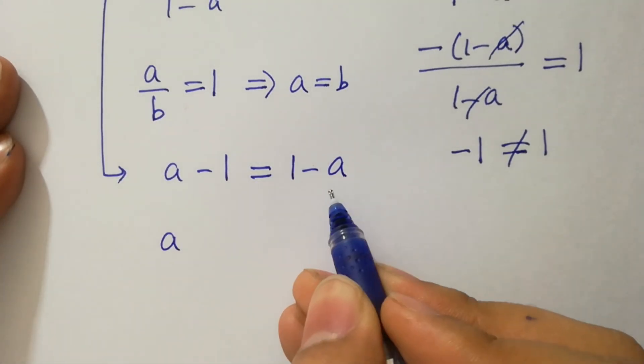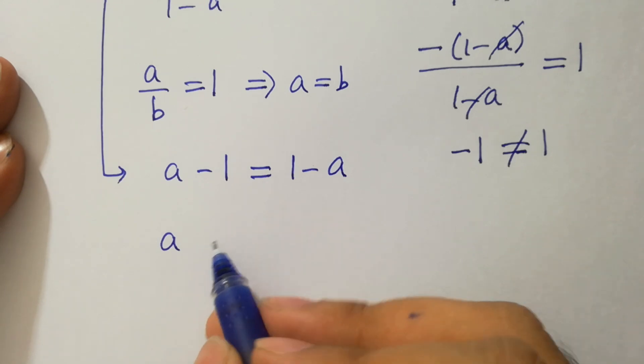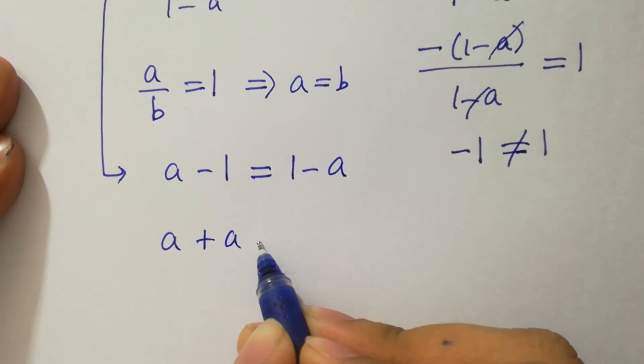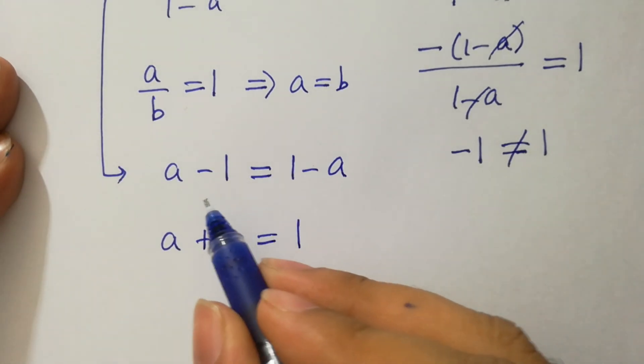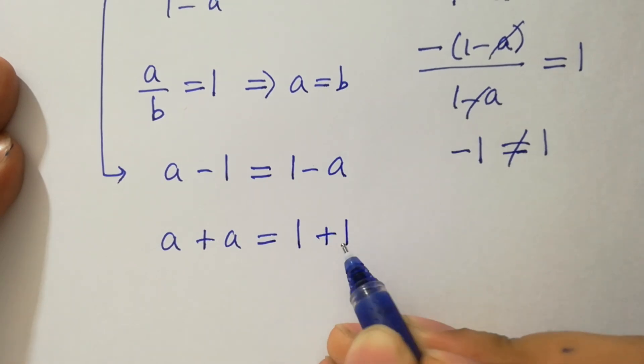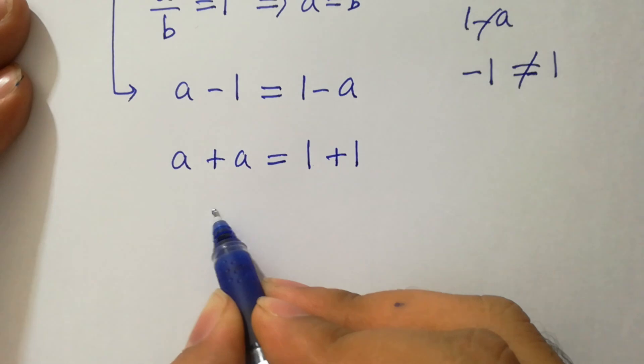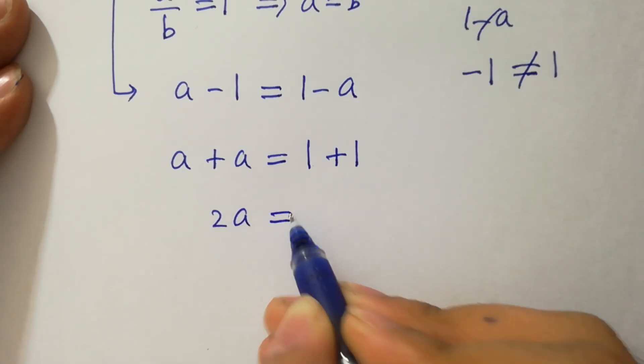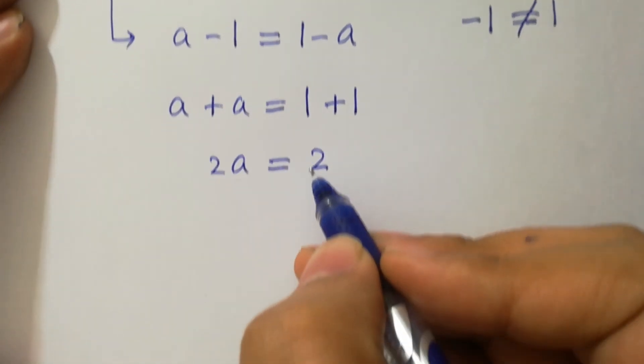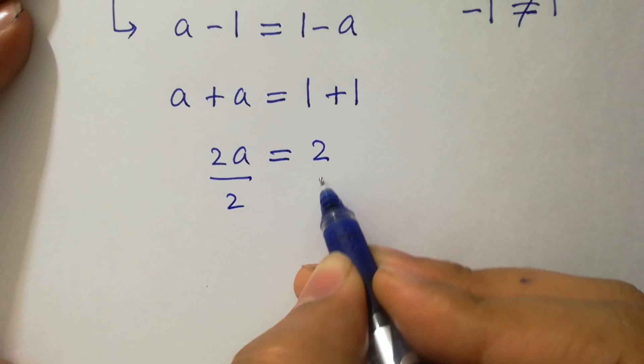a as it is, minus a on the left hand side will be here plus a, equals 1. Minus 1 on the right hand side will be here plus 1. a plus a, we have here 2a equal to 1 plus 1 is 2. Divide by 2 on both sides, where 2 cancels.